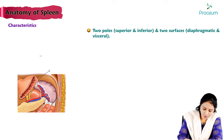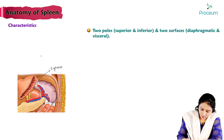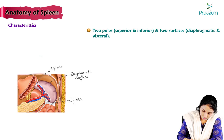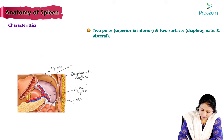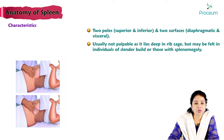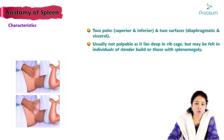Here we can see the superior pole, inferior pole, the diaphragmatic surface in relation to the diaphragm, and the visceral surface. Usually the spleen is not palpable as it lies deep in the ribcage, but it may be felt in individuals with slender build or those with splenomegaly.